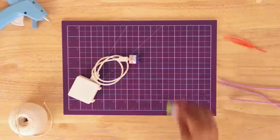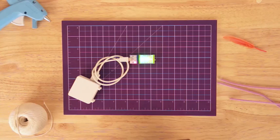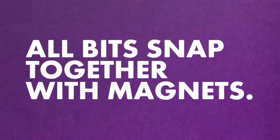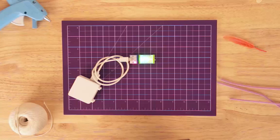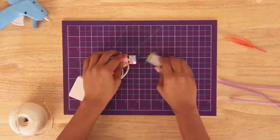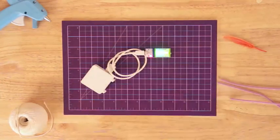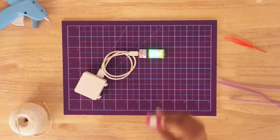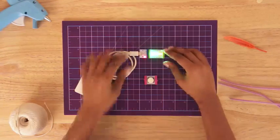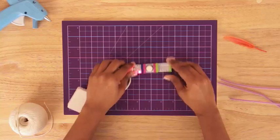Next, grab a bar graph bit and snap it to your power bit. All bits snap together with magnets. If your bits don't easily snap together, one of your bits is probably backwards or upside down. Just flip one of the bits around and they should connect. Try adding the button between your power and bar graph. Do you see what happens when you press the button?